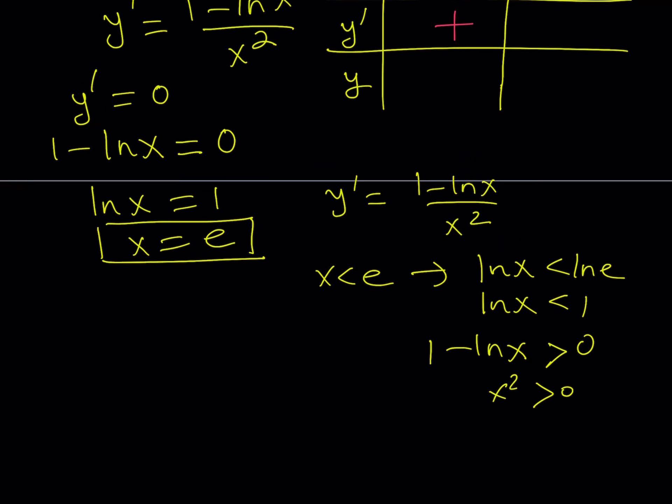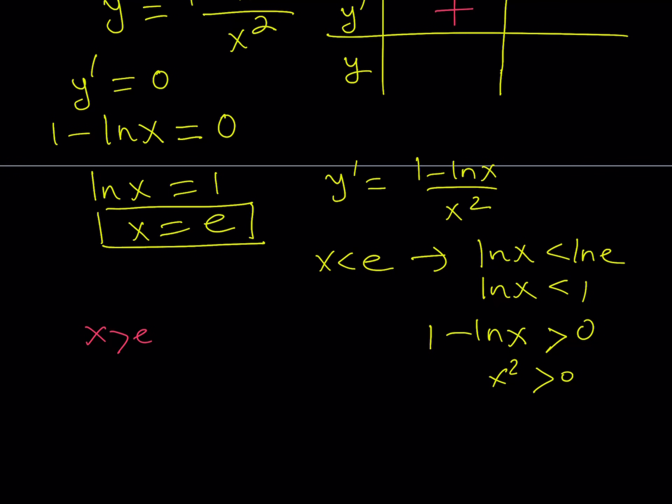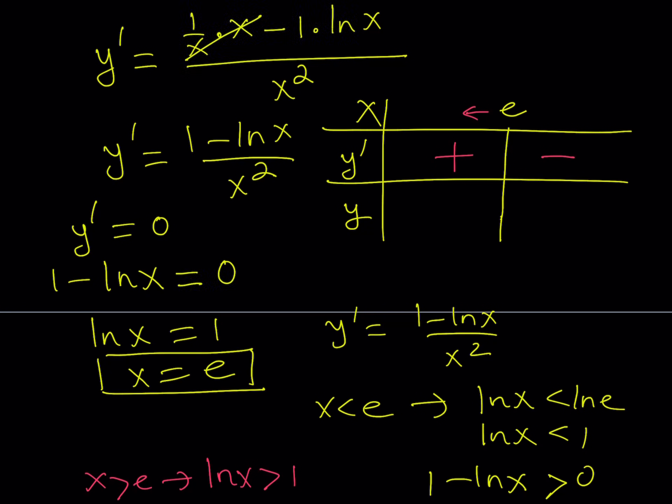What happens if x is greater than e? By the same token, ln x is going to be greater than 1, which means that 1 minus ln x is going to be negative. Because if you subtract a number larger than 1 from 1, you get a negative answer. It could just manipulate inequality, whatever. So now here, we're going to have a negative value for the derivative.